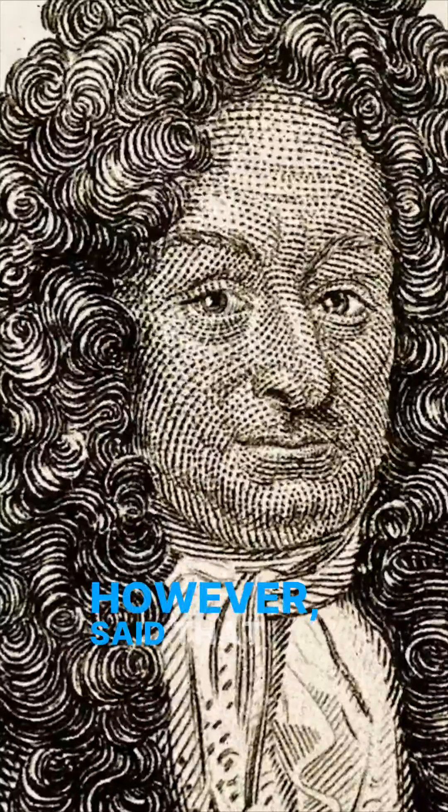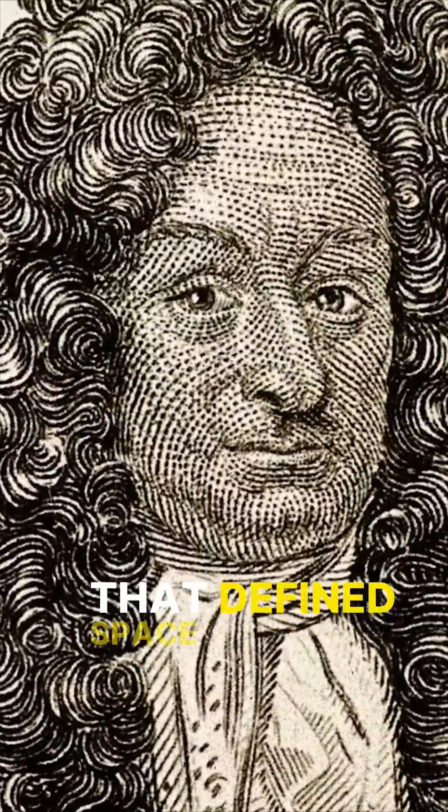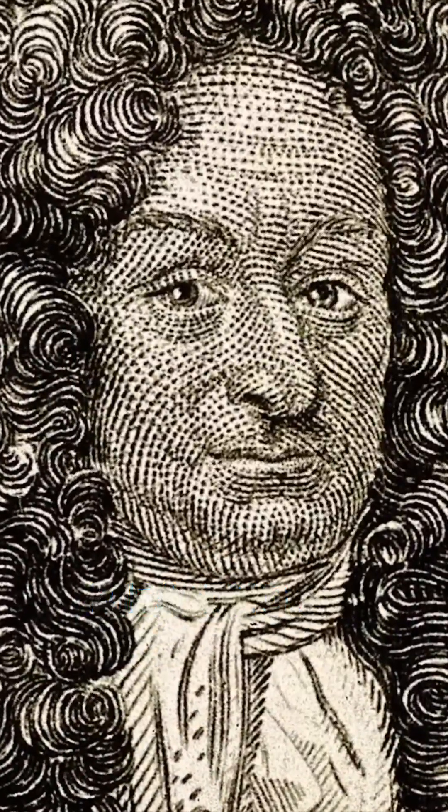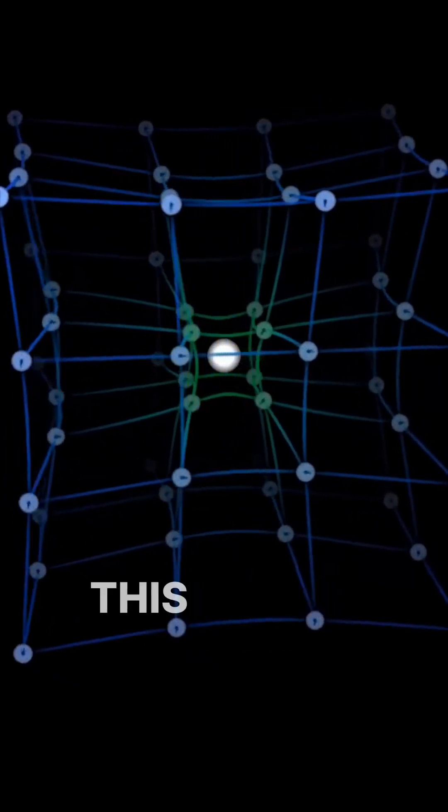Leibniz, however, said that it was the relationships between matter that defined space and time. Without them, space and time would have no meaning, and the relativistic vision of space-time seemed to match this picture.